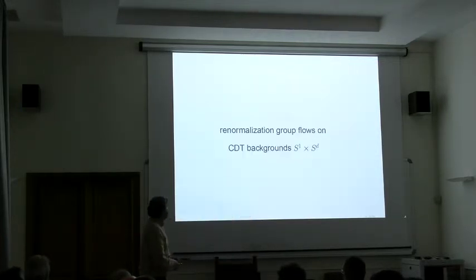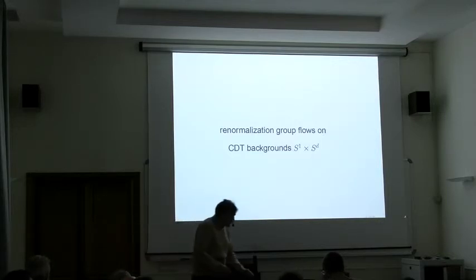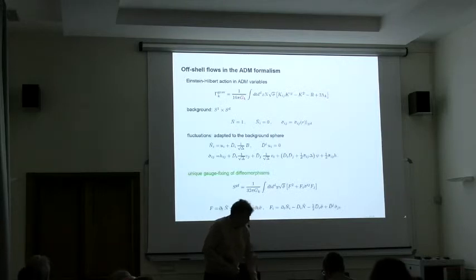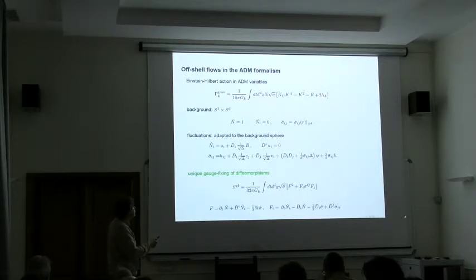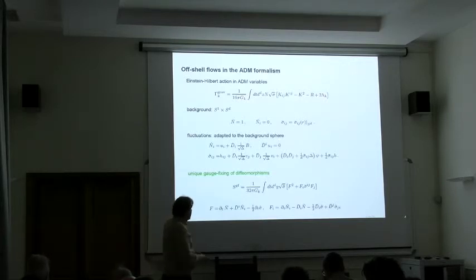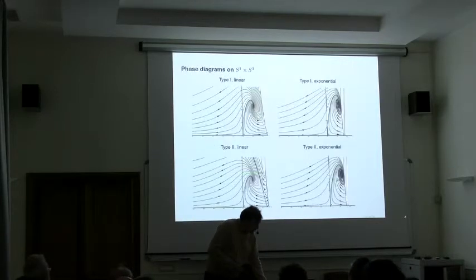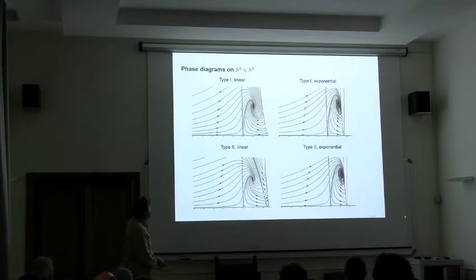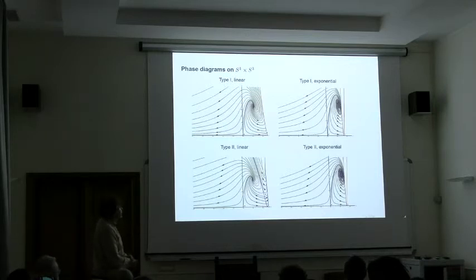The main part in terms of CDT investigations used the background S1 times S3. We decided to check what happens if we change this background in terms of flow equations. The setup is the same. We only need to change the reparametrization of our fluctuation fields. We adjust it to the background sphere. In this case, again, there is a unique gauge fixing which leads to well-defined propagators. You can construct the same type of flow diagrams. Here we have different parametrizations of the fluctuations. Again, the thing looks strikingly similar to what we had before, with the exception of the diagram that we have down here.